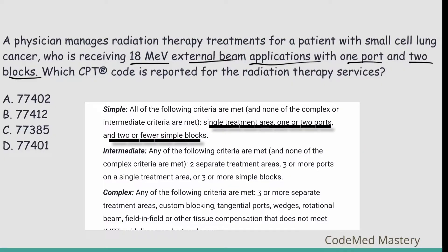For intermediate: two separate treatment areas, three or more ports on a single treatment area, or three or more simple blocks. For complex: three or more separate treatment areas, custom blocking, tangential ports, rotational beam, etc. In the question, one port and two blocks are mentioned.